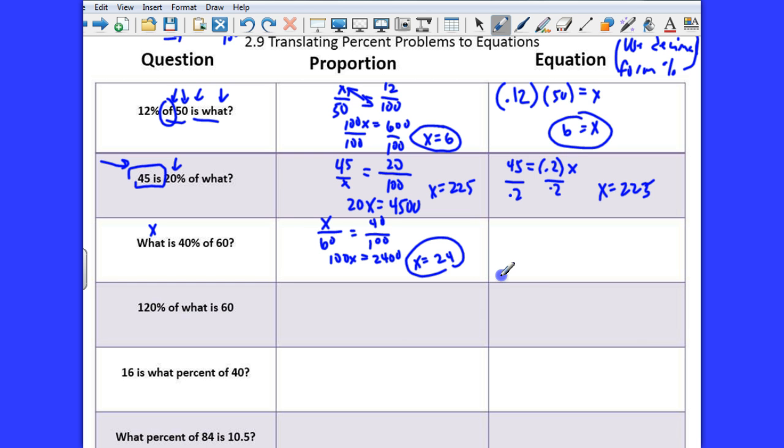Now let's go on to the next one to do that as an equation. What, so just read it left to right. What, x, is, equals, 40%, 0.4, of 60, that means times 60. Now that's easy. x is isolated. Multiply that, guess what? It's 24. Same thing.